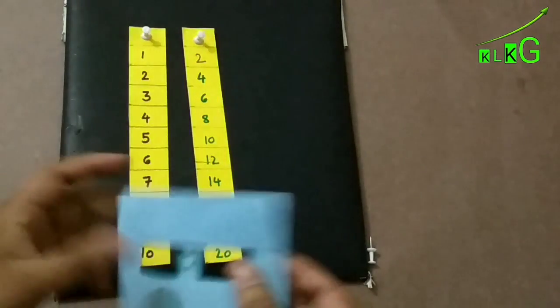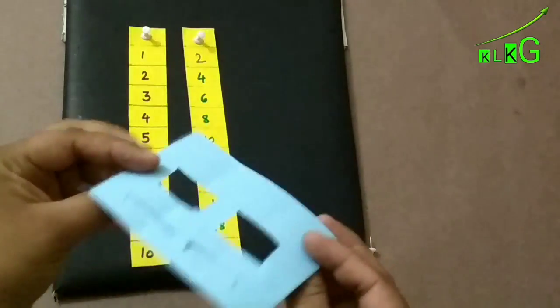Now see, we'll just set the strips on a thermocol sheet which is covered with black chart paper.